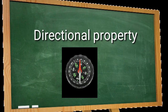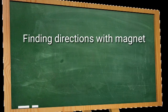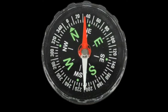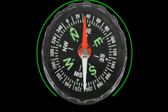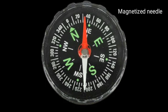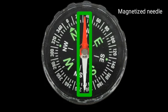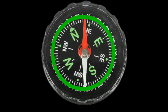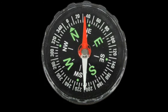This directional property is used in the magnetic compass. Now we have completed the first today's objective. Next is the magnetic compass. A compass is usually a small box with a glass covering it. A magnetized needle is pivoted inside the box in such a way that it can rotate freely. The compass also has a dial with directions marked on it.